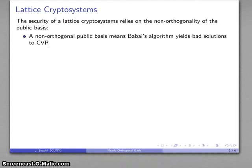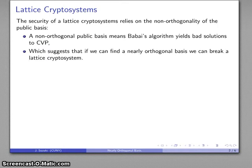A non-orthogonal public basis means that Babai's algorithm yields very bad solutions to the closest vector problem. This means that if I can somehow find a nearly orthogonal basis, I can break a lattice cryptosystem.